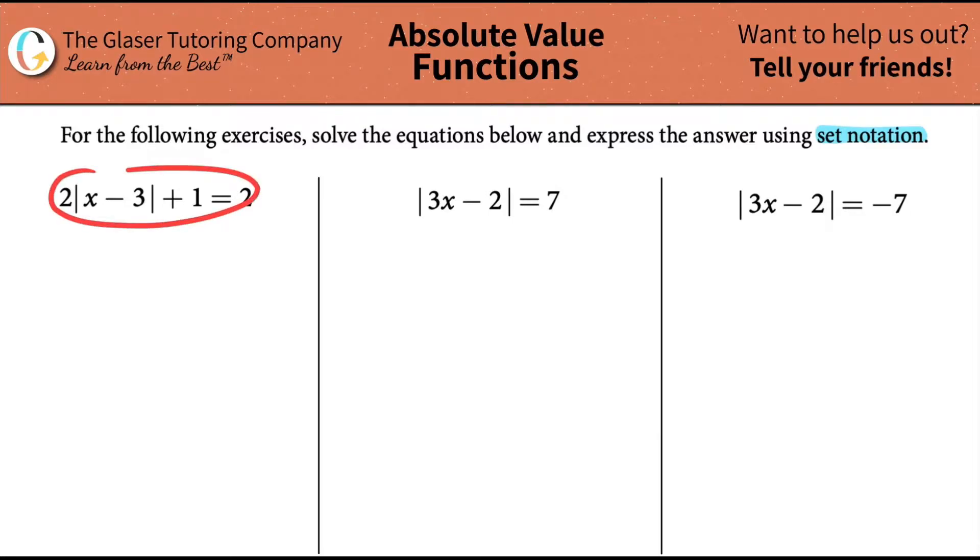So the first one, we want 2 times the absolute value of x minus 3 plus 1 equals 2. Remember the idea, the object of the game is to always get x by itself. Now x is being surrounded by these brackets or these straight lines. That's the absolute value. We have to deal with that last. So we need to get rid of all the numbers outside of the absolute value.